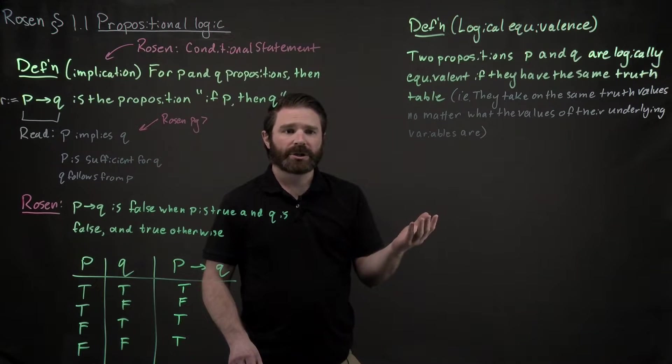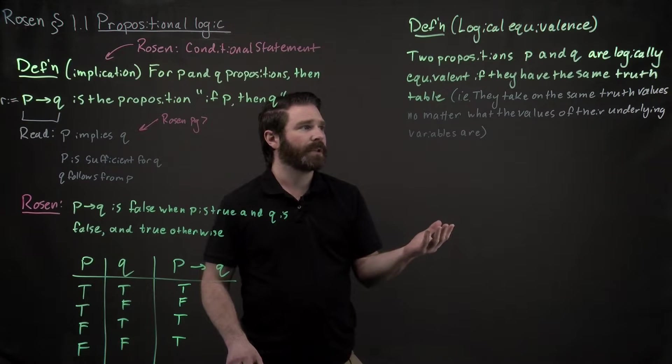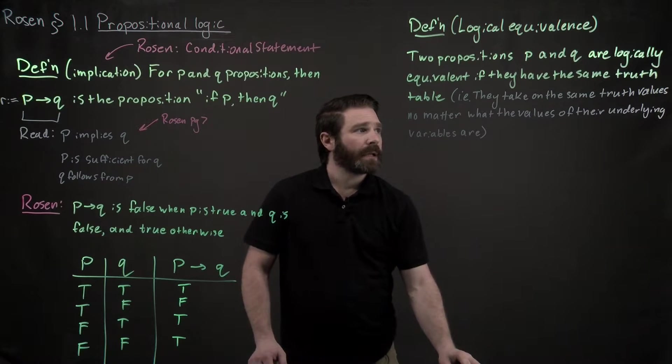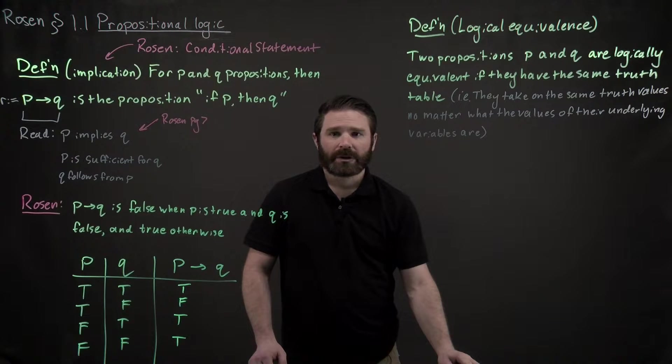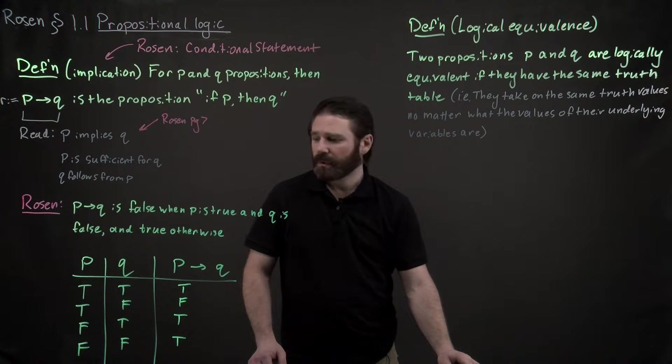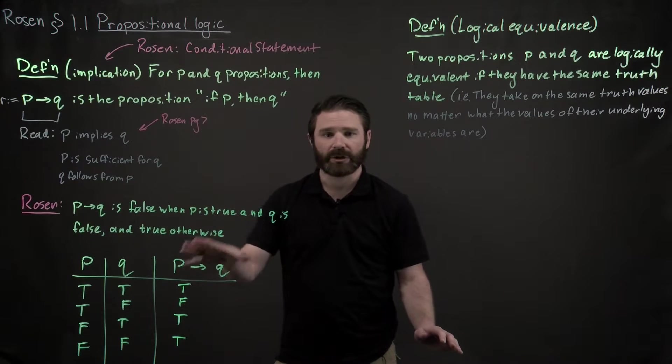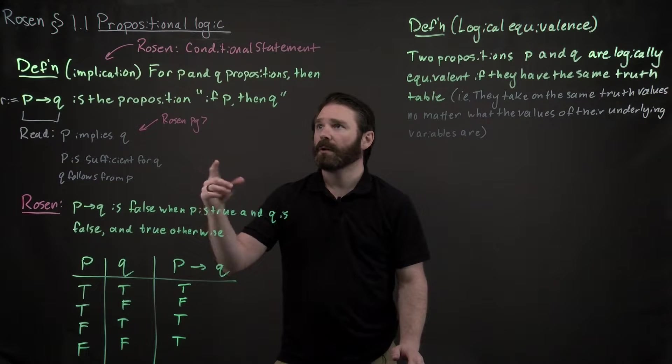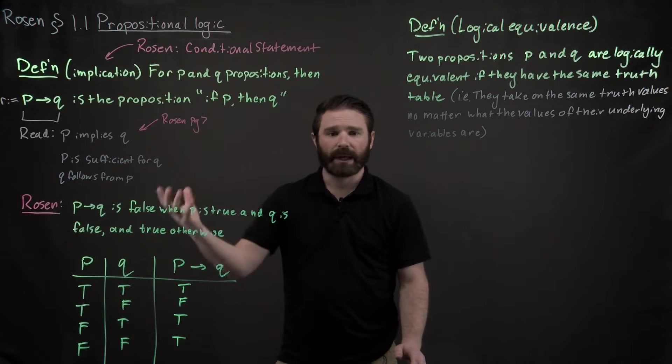So two propositions, logically equivalent if they have the same truth table. And this will actually help us to explain this implication and relate it back to our previous logical operators that we had.